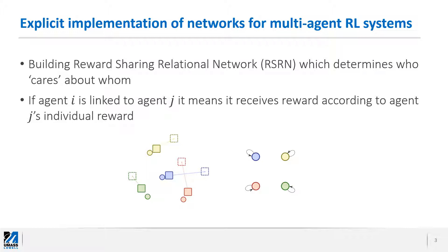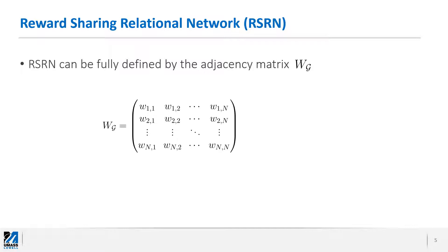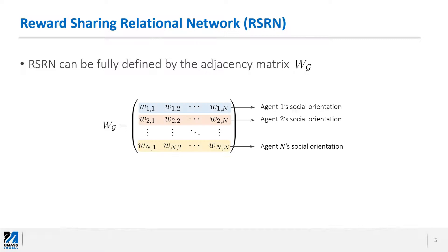For example, in a self-interested scenario, all the self-loops indicate that each agent only cares about itself. You can also see that agent blue and agent red have a potential conflict. But if agent blue cares about agent red — besides caring for itself — it may stop for a second and let the red agent pass first. A reward sharing relational network, or RSRN, can be defined using its adjacency matrix.